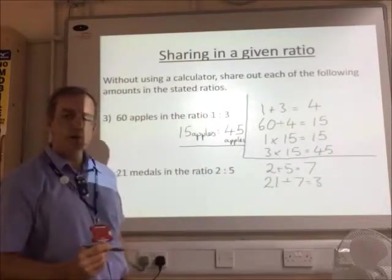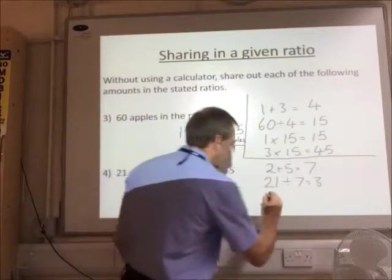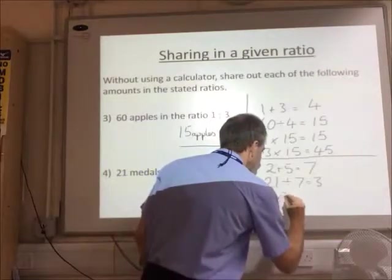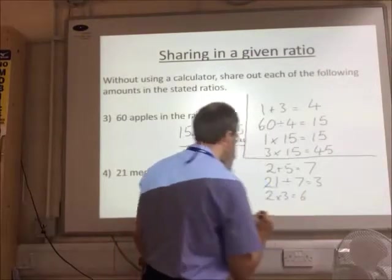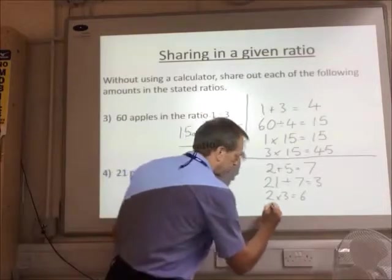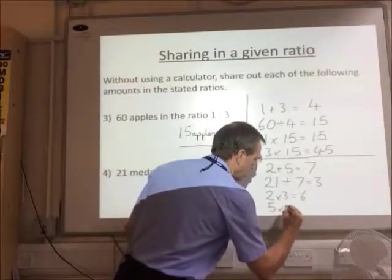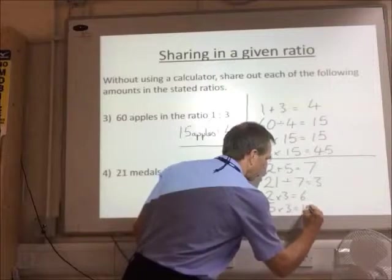And then finally multiply. 2 times 3 equals 6, and 5 times 3 equals 15.